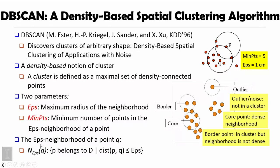The epsilon neighborhood of a point Q is defined as all points P whose distance to Q is less than or equal to epsilon. For example, if a point Q has five points in its neighborhood, we call it a core point. If a point itself does not have that many neighbors but can be reached by a cluster, we call it a border point. If a point is isolated and cannot be reached by any cluster, we call it an outlier or noise.